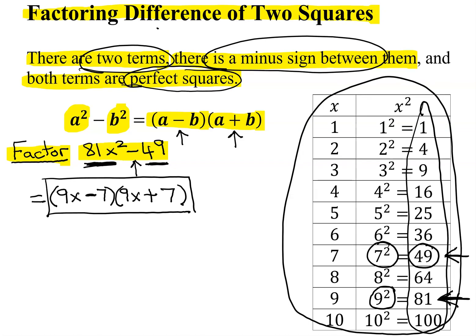The one nice thing about factoring problems is you can easily check your answers. So let's check it by foiling it out quickly. First term, 9x times 9x is 81x squared.